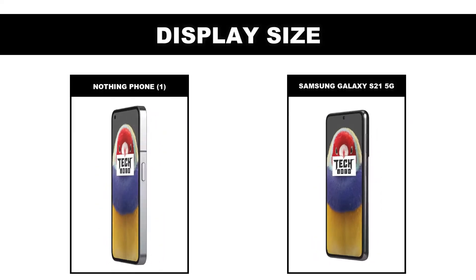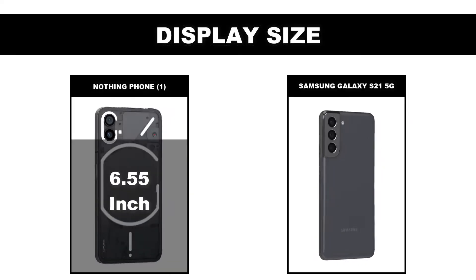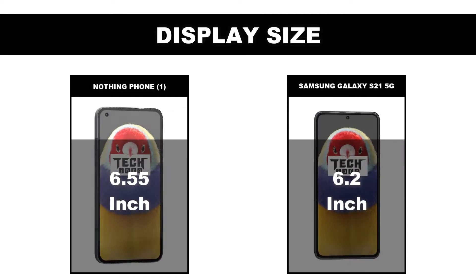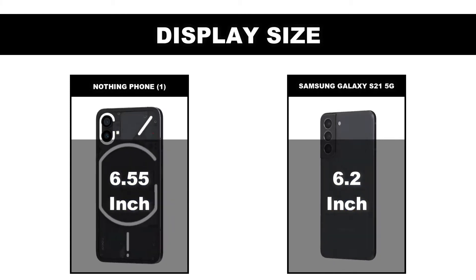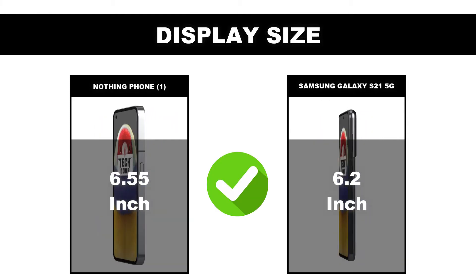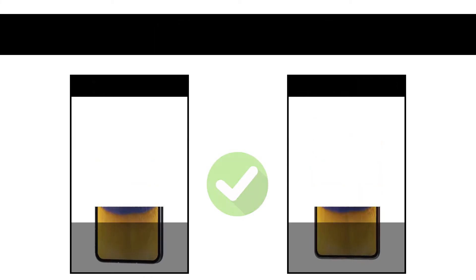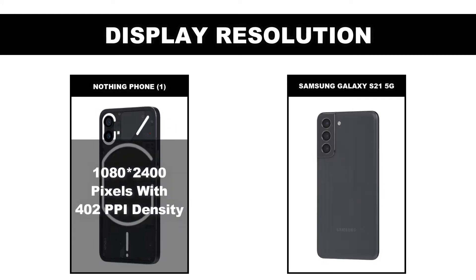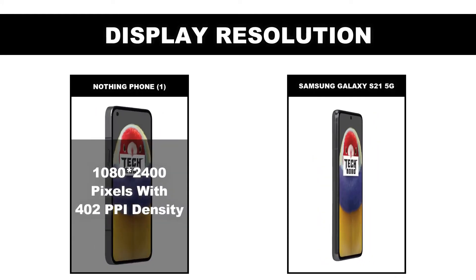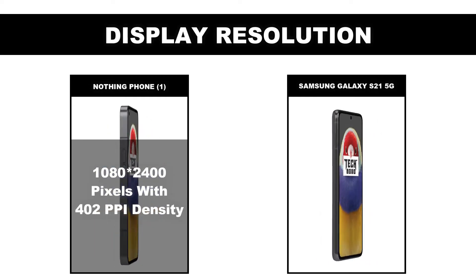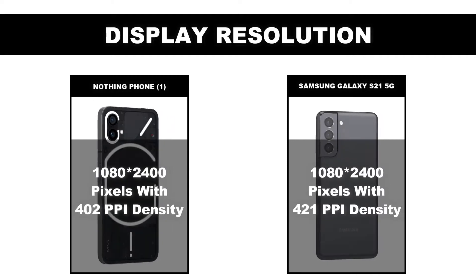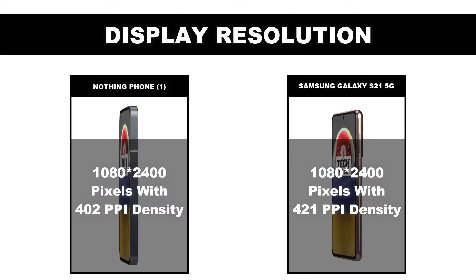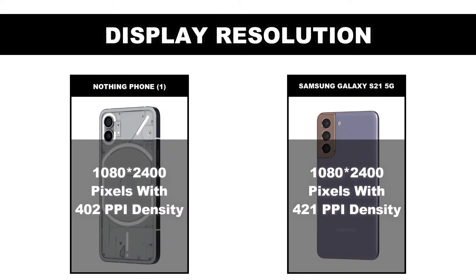Display size: Nothing Phone 1 is 6.55 inches, Samsung Galaxy S21 5G is 6.2 inches. Display resolution: Nothing Phone 1 is 1080x2400 pixels with 402 PPI density, Samsung Galaxy S21 5G is 1080x2400 pixels with 421 PPI density.